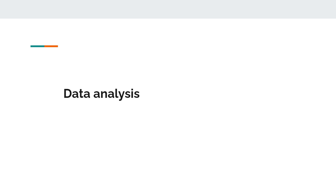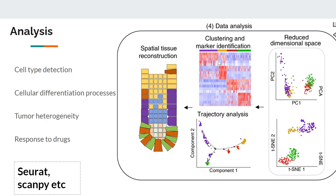The fourth main step is data analysis. With the count matrix we can perform clustering to identify different cell subtypes, trajectory analysis to study cell differentiation paths, and differential marker identification to find genes that distinguish one cell subtype from another. Many other analyses are also possible once we have the raw count data.